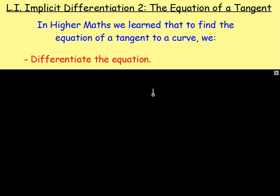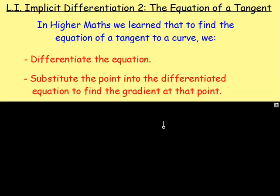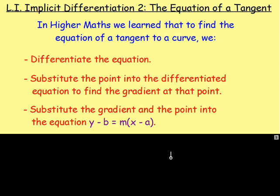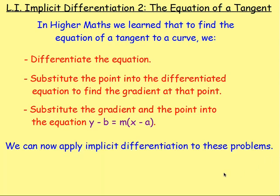And then how would you actually work out the gradient? You would substitute in the point. Yes, you would sub in the point. So first of all, differentiate, then sub in the point to get the gradient. And then after that: Y minus B equals M bracket X minus A. You've got the gradient and you've got a point, so then you can sub that into the equation. What we're now going to do is apply that to implicit differentiation.